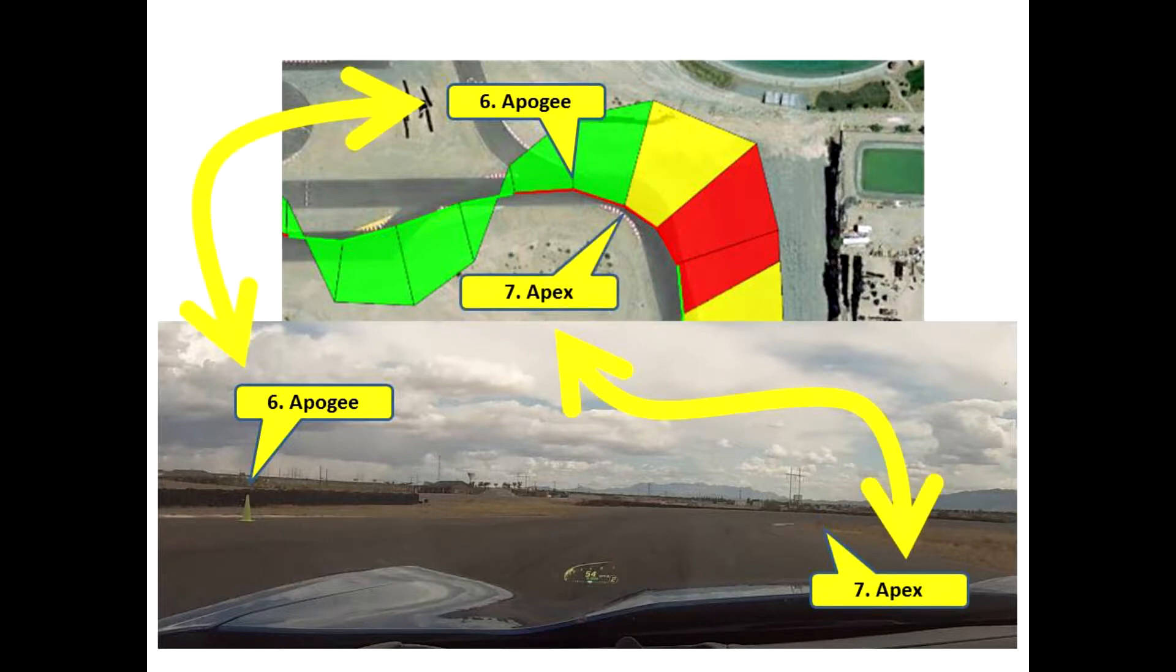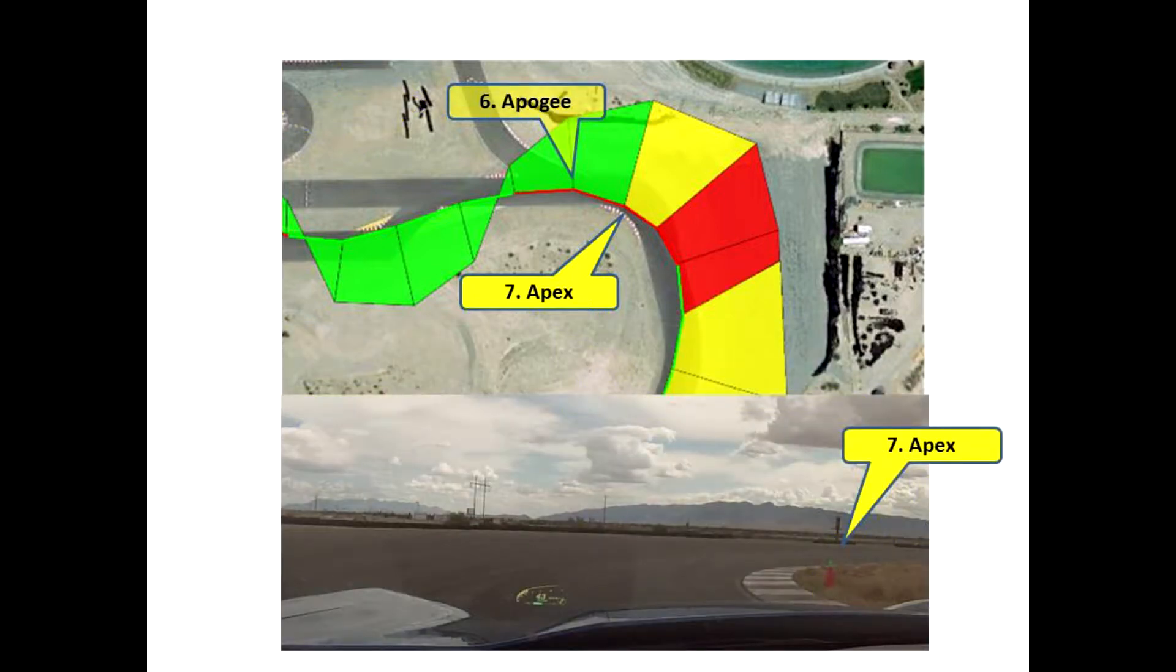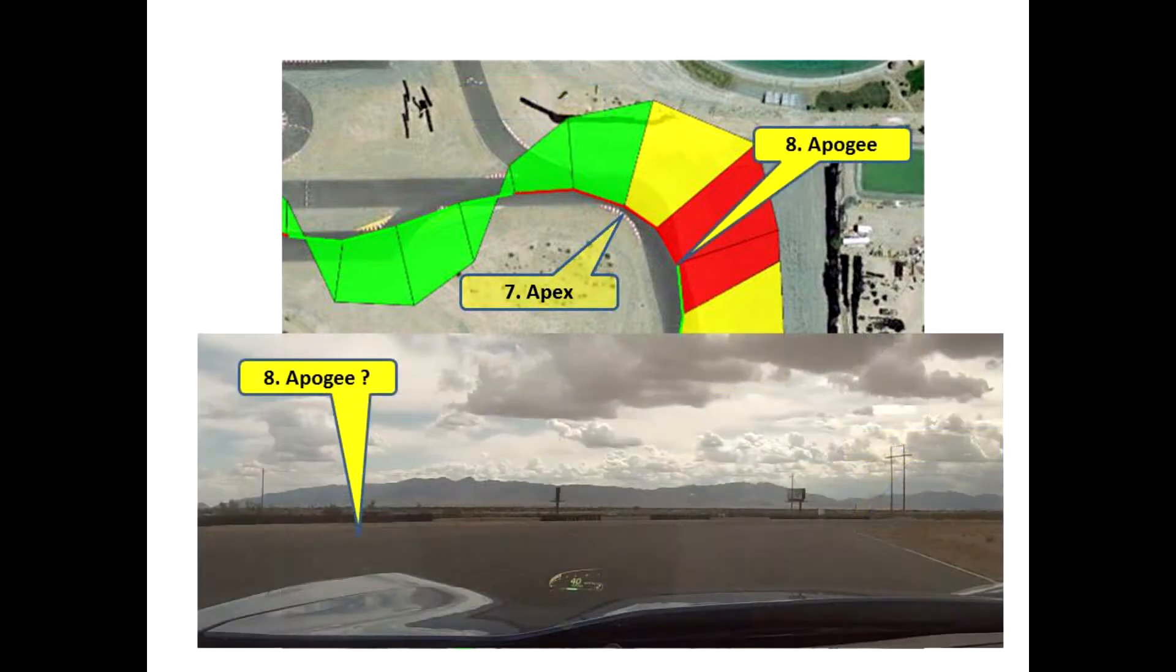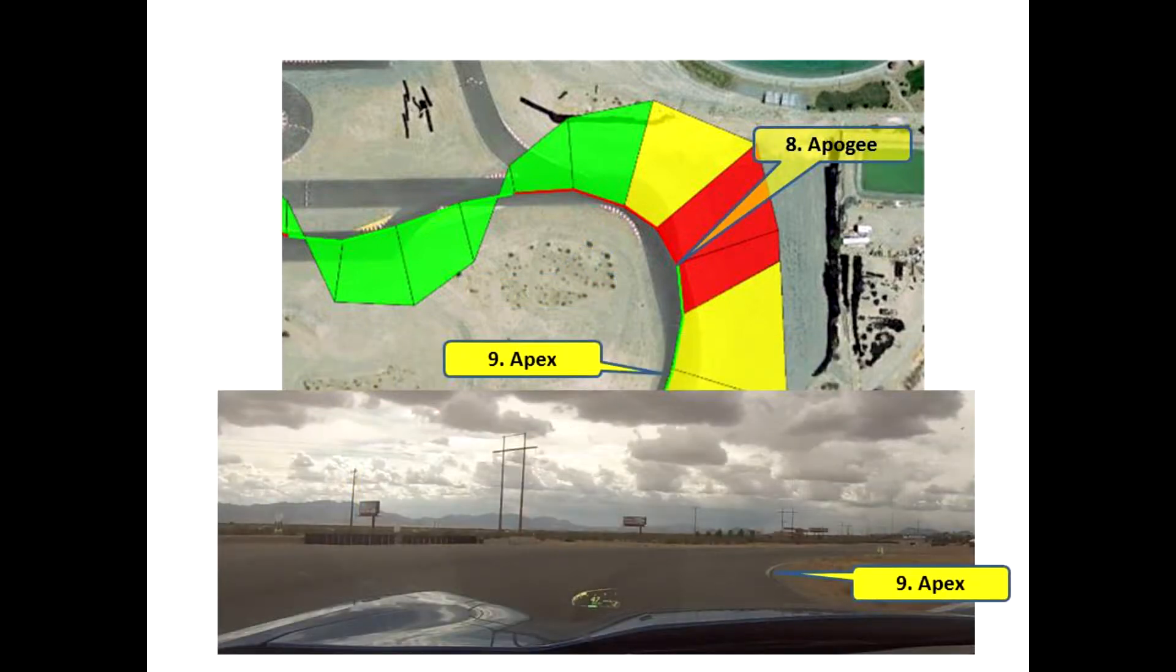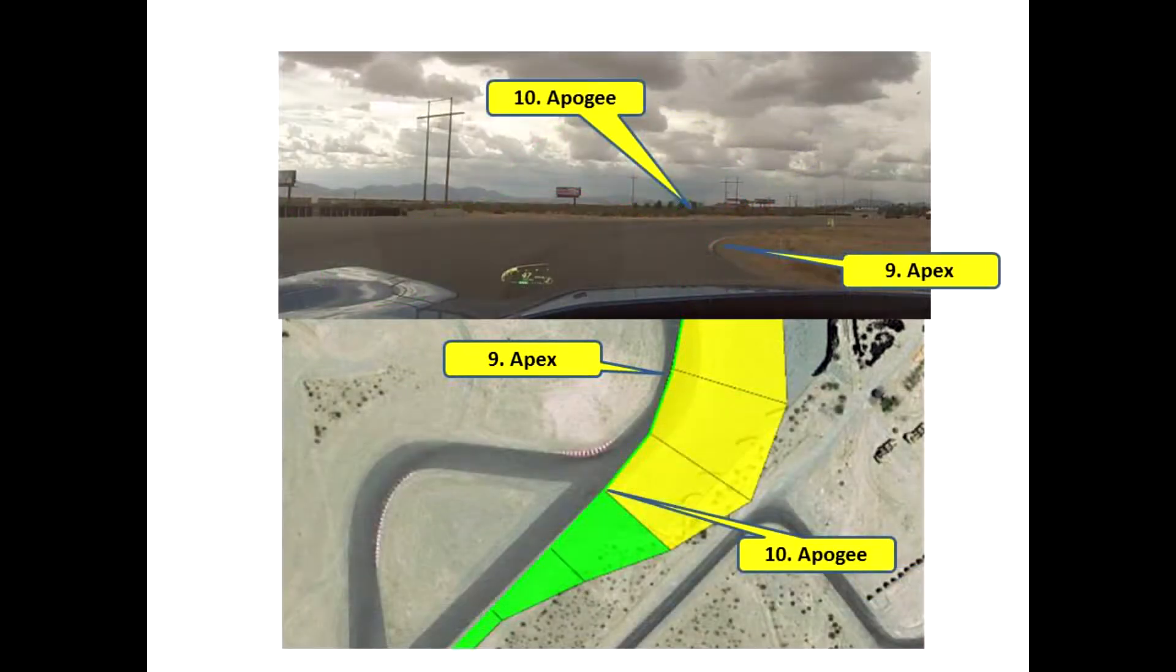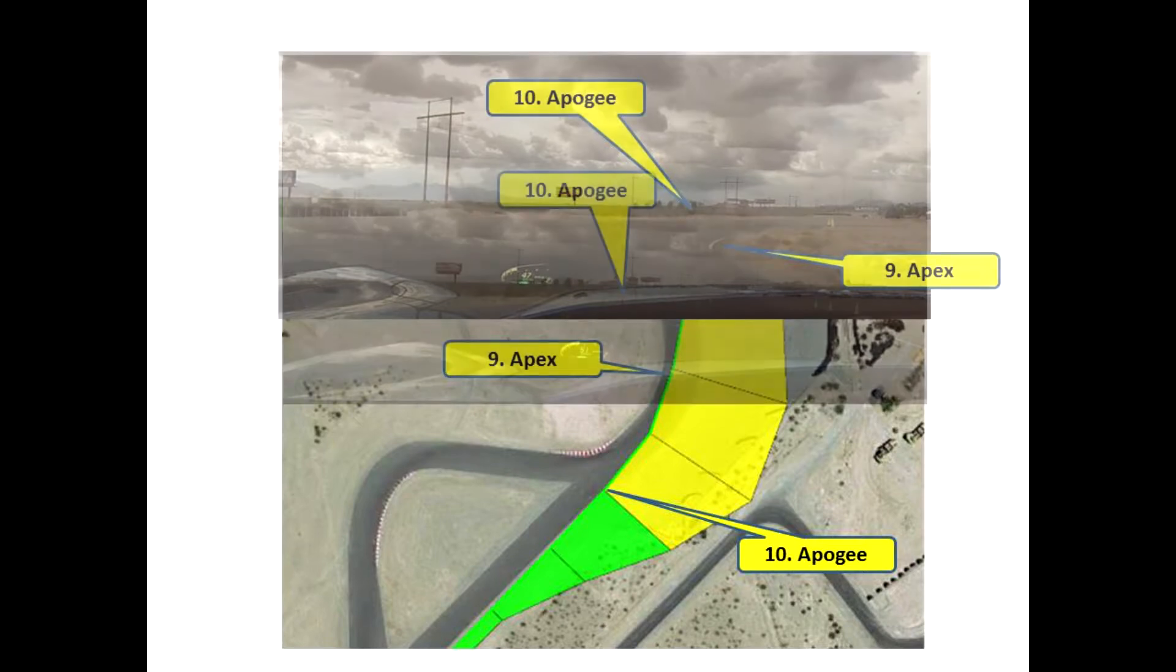That apex departure leads to the apogee for turn 17. This is the critical part of the turn because this is where you're going to invoke the maximum lateral g-forces. So you want to know about your speed and hit the apex properly so that you can then hit the apogee with the maximum lateral g's and the apex for turn 17, aiming for the apogee for the Michelin straight, the 10th question.